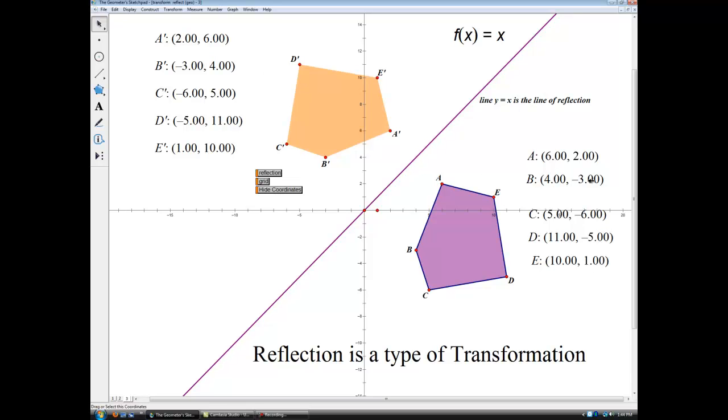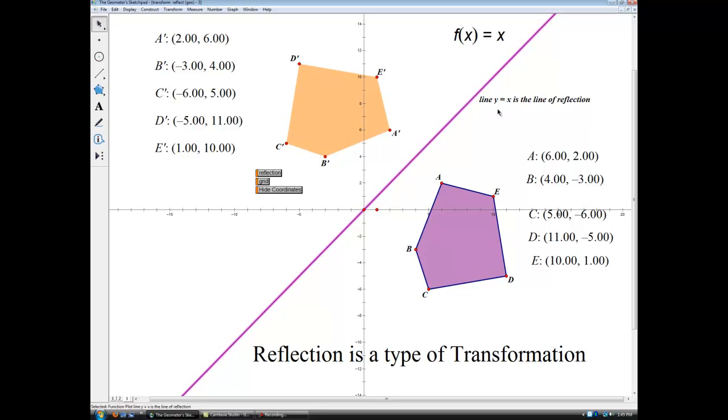B is (4, -3). B prime, (-3, 4). This is starting to examine a pattern when this line of reflection, the line y equals x, means it has a slope of 1 and a y intercept of 0. Right? Sort of like our parent graph for lines, our most basic line.